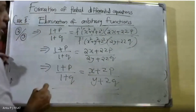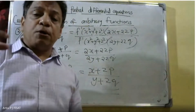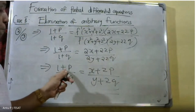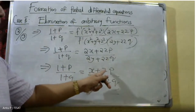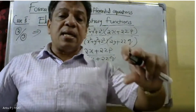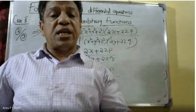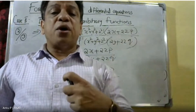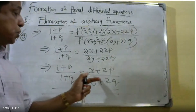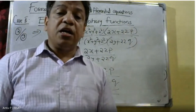This is the final equation: one plus P by one plus Q is equal to X plus ZP by Y plus ZQ, which is the required partial differential equation.